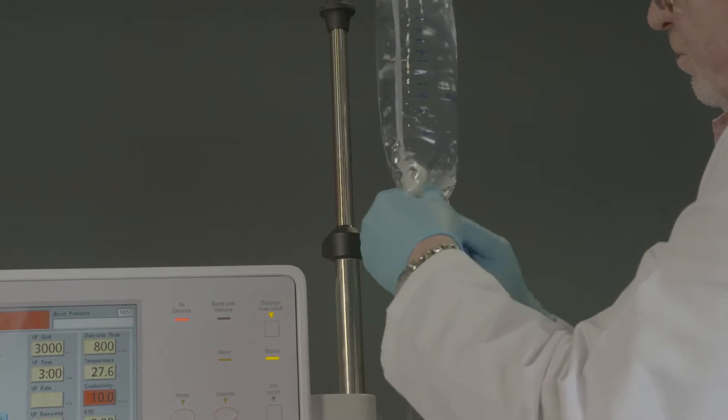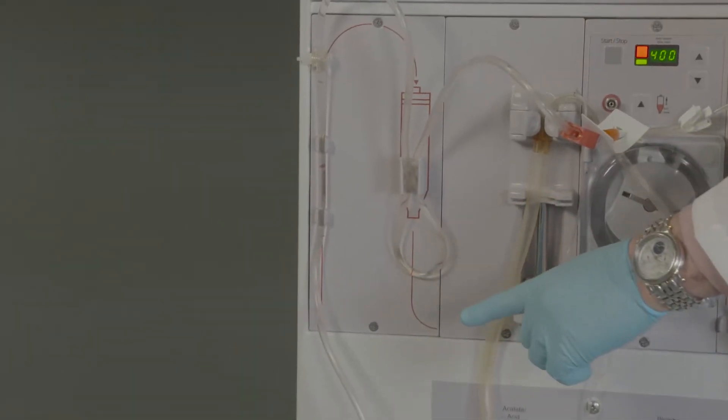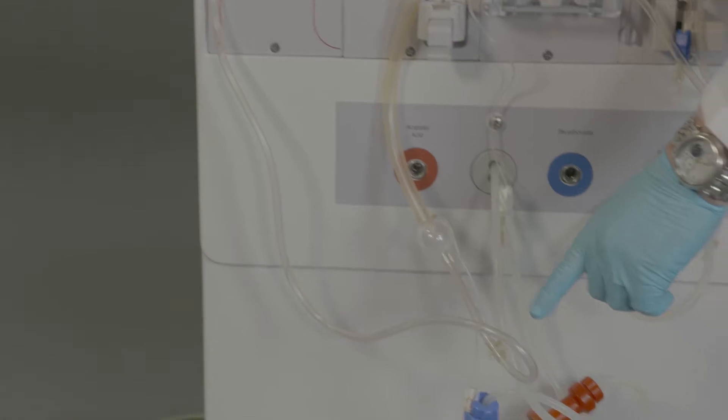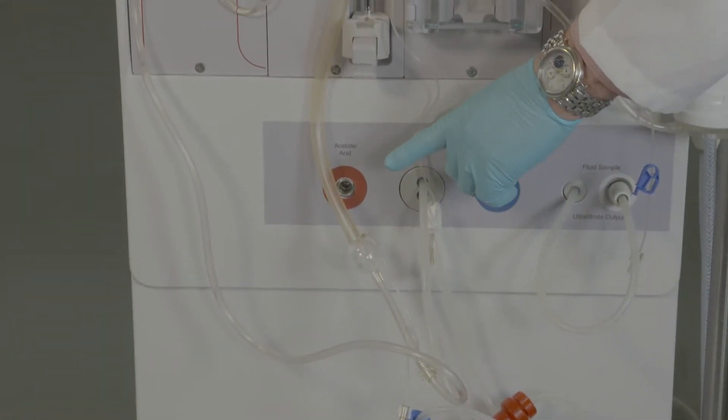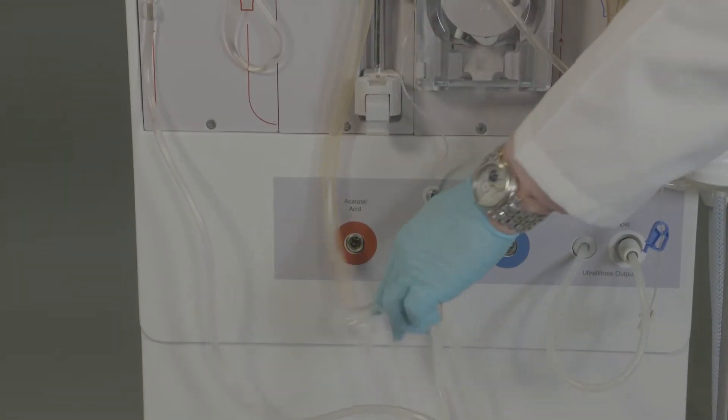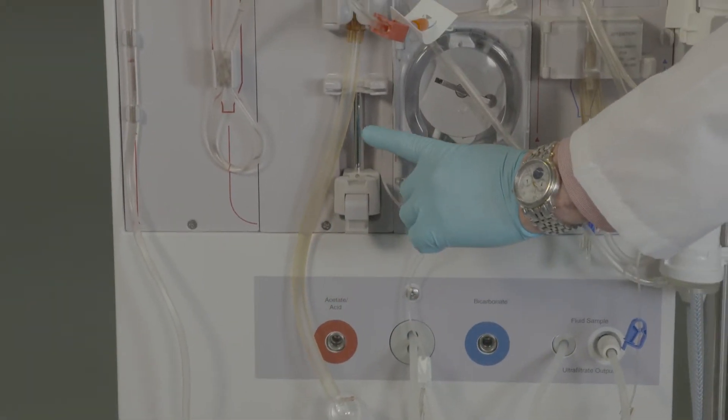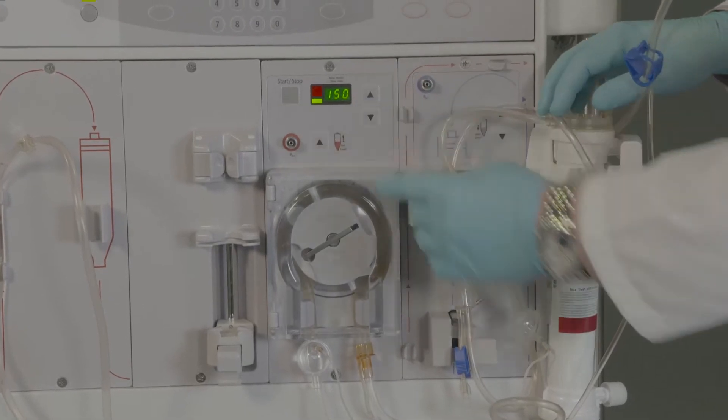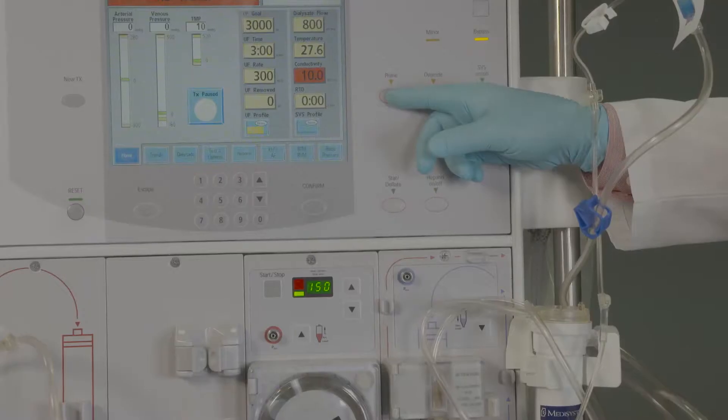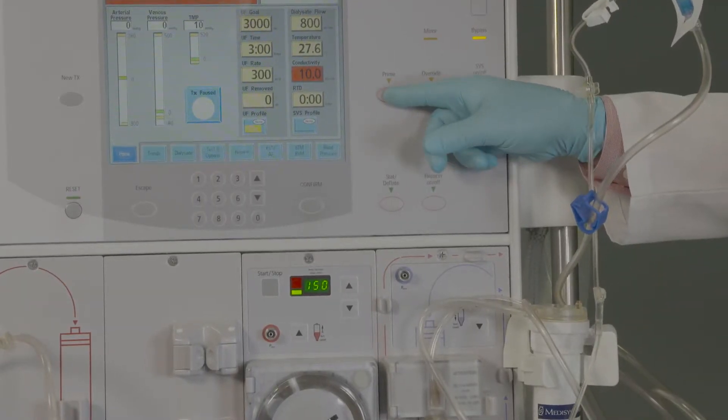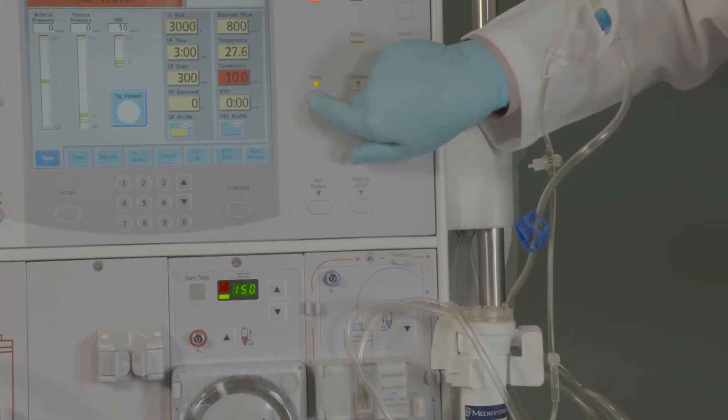Next is to perform a gravity prime before placing the tubing into the blood pump to ensure removal of all air. Saline must fully fill the arterial line, including the pump segment, up to the arterial dialyzer connection before inserting into the blood pump. We can then set the blood pump rate to between 150 and 200 milliliters per minute with a 300 milliliter prime amount volume.